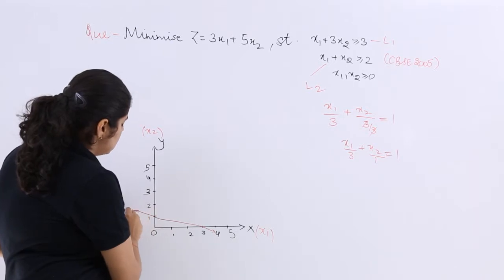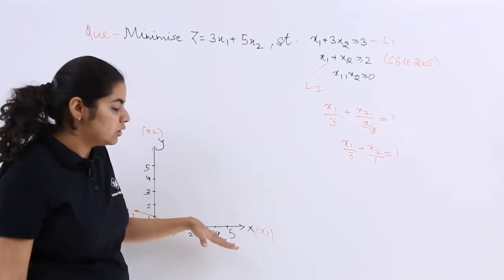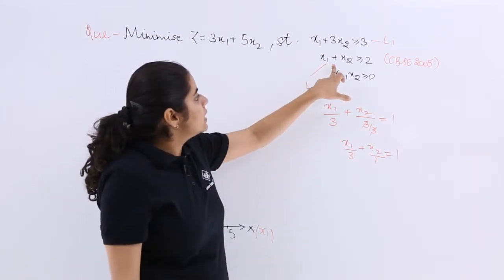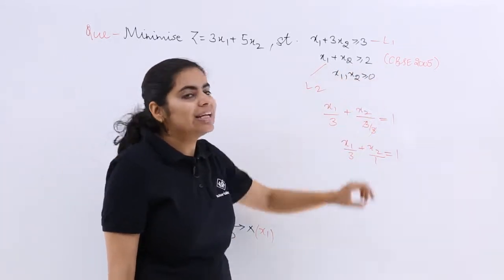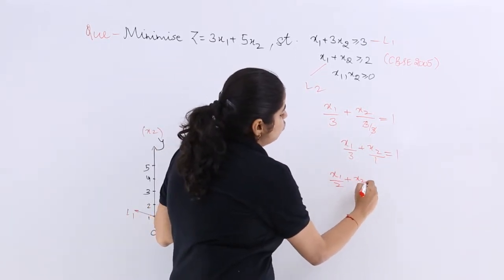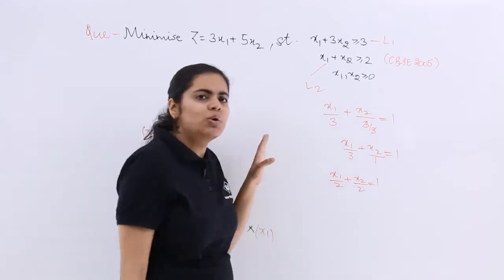Now, this is your L1 line. This has not been made with the ruler, so it is not coming out as straight. Next, here it is x1 plus x2 greater than or equal to 2. It can be named as x1 upon 2 plus x2 upon 2 equals 1. Means both are 2.